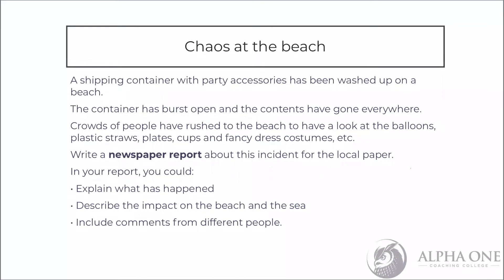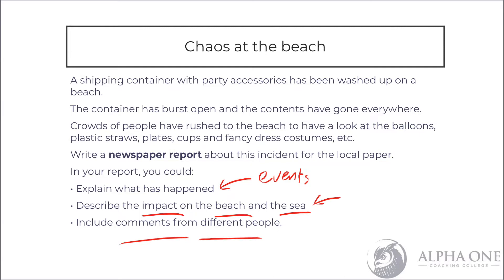In your report you could: explain what has happened — recounting the events; describe the impact on the beach and the sea, not just on people but specifically on the waterways; and include comments from different people. What is a news article without statements? You can have quotes from witnesses and authorities. We'll also look at additional things to make your writing piece much more effective.